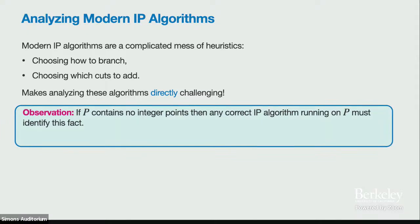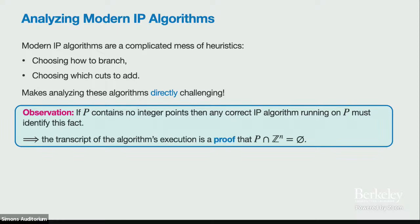Instead, we can turn to proof complexity. If the polytope contains no integer points and we run the integer programming algorithm, then since the algorithm is deterministic, its execution trace has to be a proof of the fact that the polytope contains no integer points. The transcript of the algorithm is a proof that there are no integer points in the polytope.